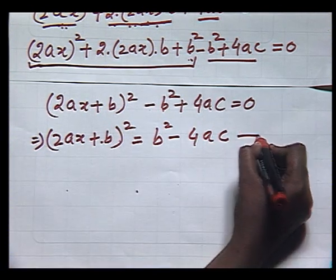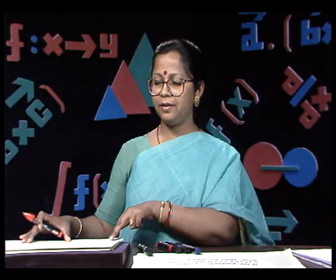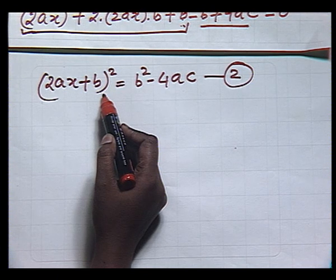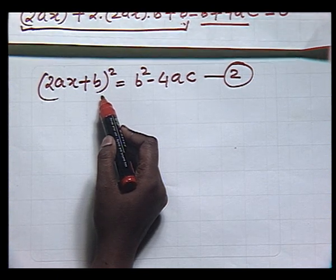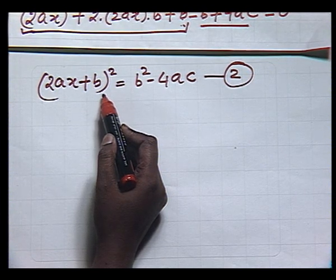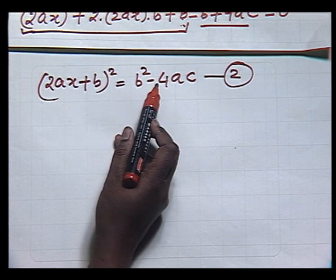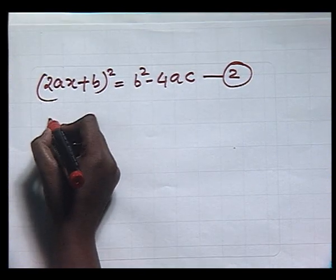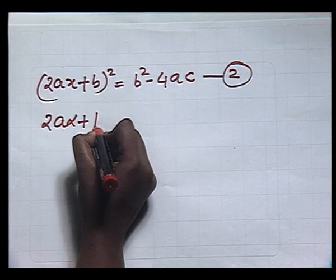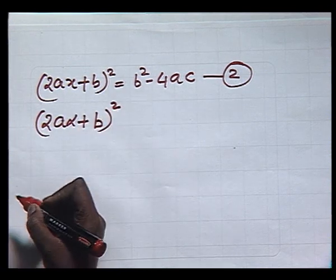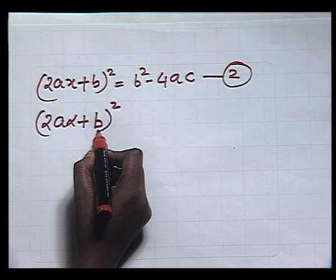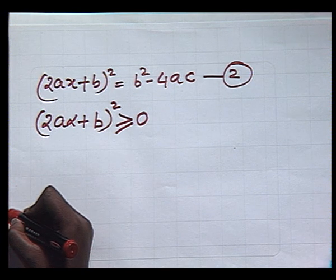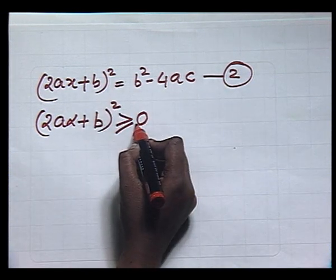Thus, we have written equation number 1 in the form of equation number 2. So, if alpha is a root of equation 1, then alpha will also be a root of equation 2. Let alpha be a real root of equation 2, then substituting x equal to alpha in equation 2, the left hand side of the equation becomes (2A·alpha plus B) whole squared, which is a square of a real number. Therefore, it must be non-negative, that is, it must be greater than or equal to 0.